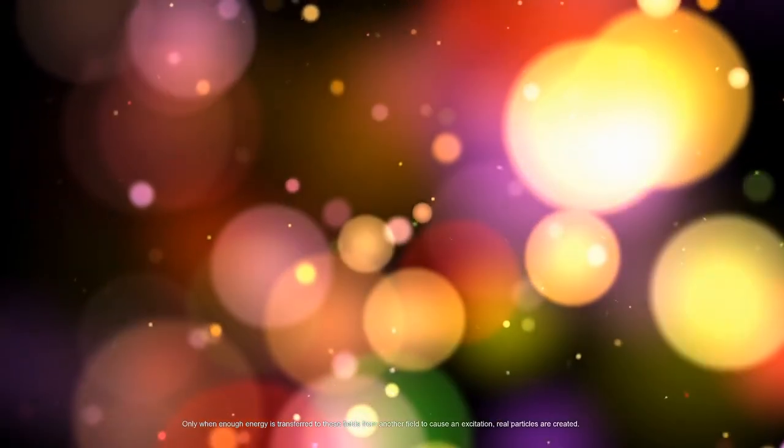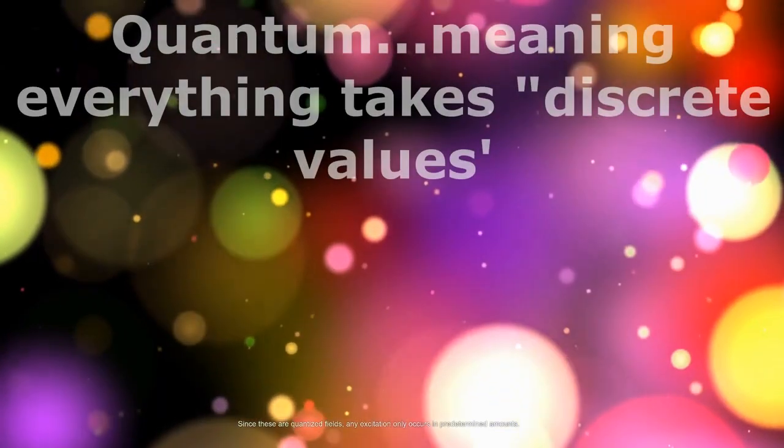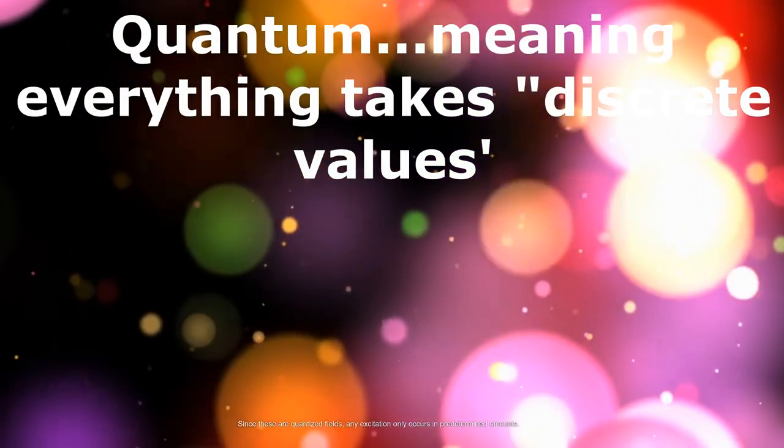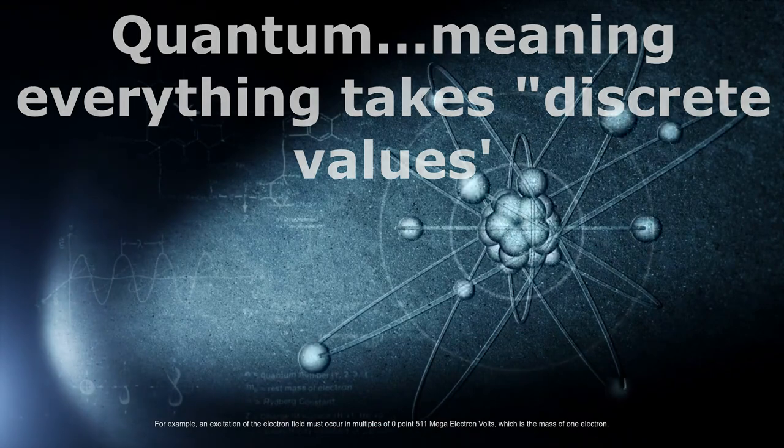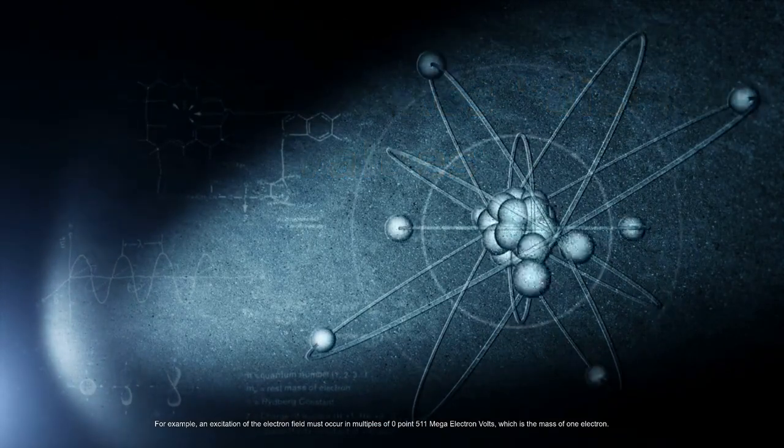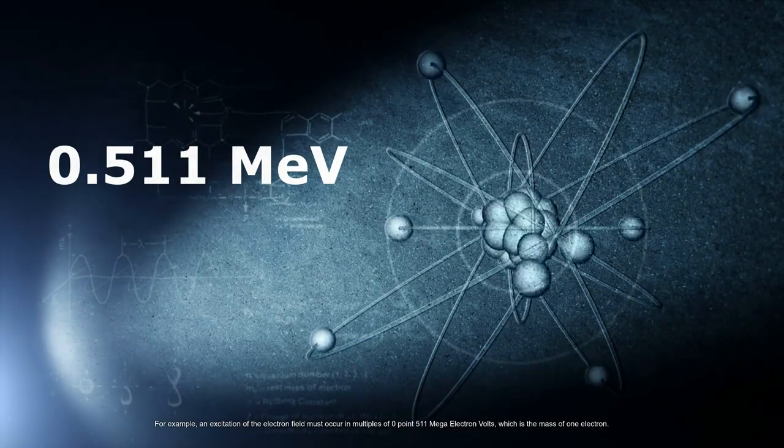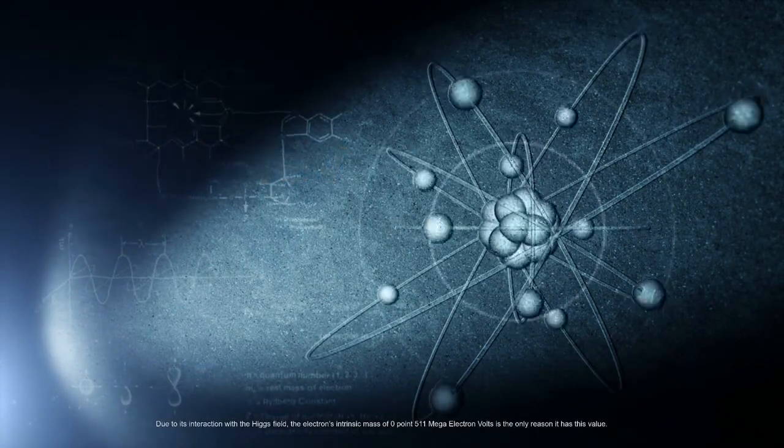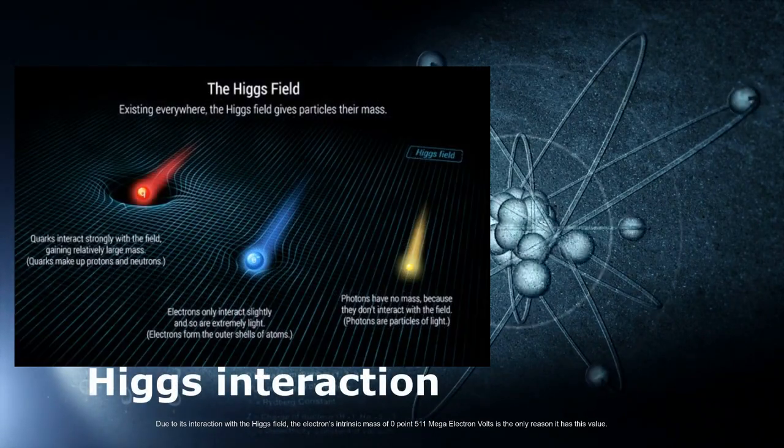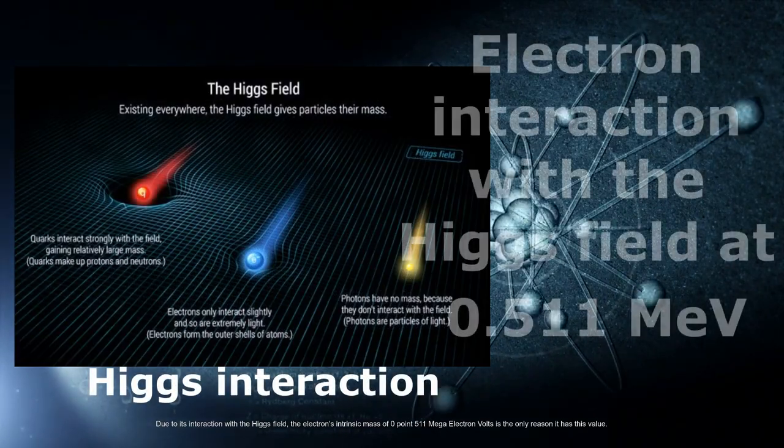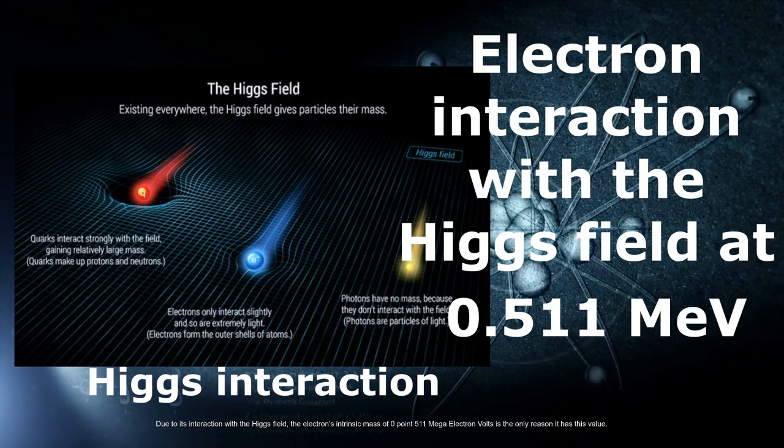Only when enough energy is transferred to these fields from another field to cause an excitation are real particles created. The actual particles are these excitations. Since these are quantized fields, any excitation only occurs in predetermined amounts. For example, an excitation of the electron field must occur in multiples of 0.511 mega electron volts, which is the mass of one electron. Due to its interaction with the Higgs field, the electron's intrinsic mass of 0.511 MeV is the only reason it has this value.